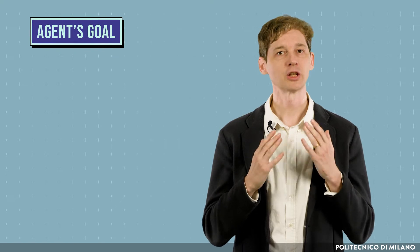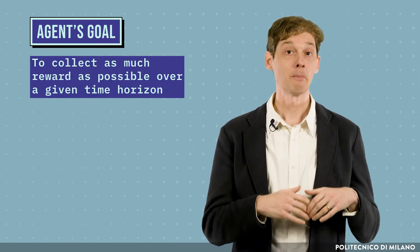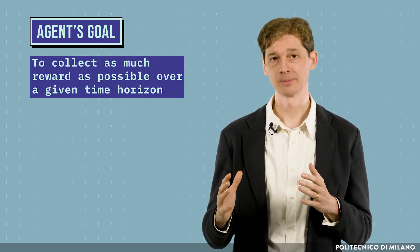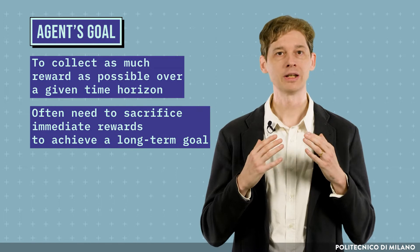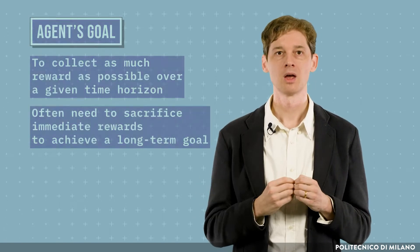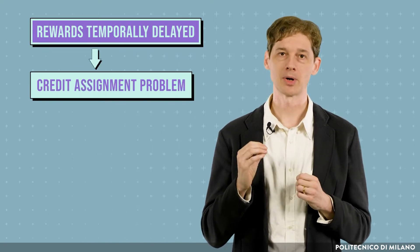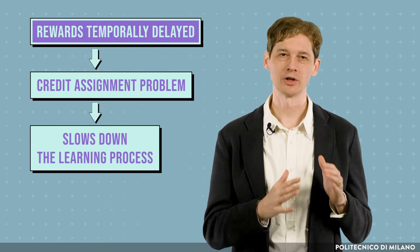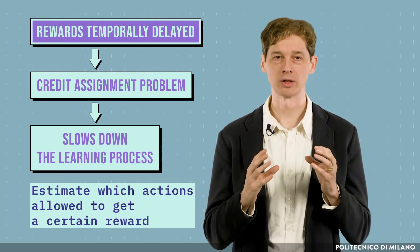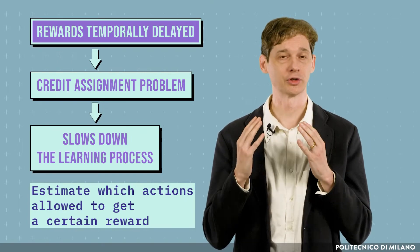The agent's goal is not to select the action that attains the maximum immediate reward, but to collect as much reward as possible over a given time horizon. We often need to sacrifice immediate rewards to achieve a long-term goal. When rewards are temporarily delayed, we have a credit assignment problem, which slows down the learning process. We need to estimate which action among the ones executed by the agent allowed it to get a certain reward.